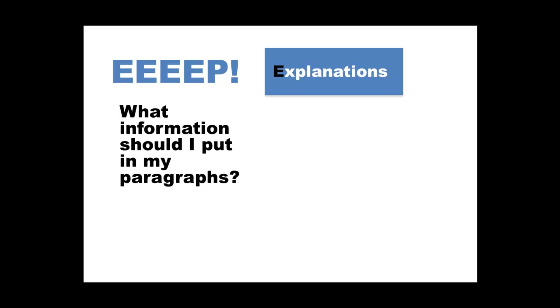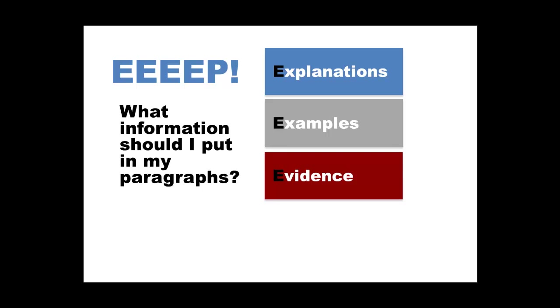When you consider what support material you need to strengthen your points, it won't be difficult if you can remember to include some of these four things. Firstly, explanations to show how the point relates to your main argument. Secondly, specific and credible examples to illustrate your point. Thirdly, relevant critical evidence to support your point. And finally, evaluation to show how you have thought critically about it. You can include these in any order, and you don't always need to include all of them at once.